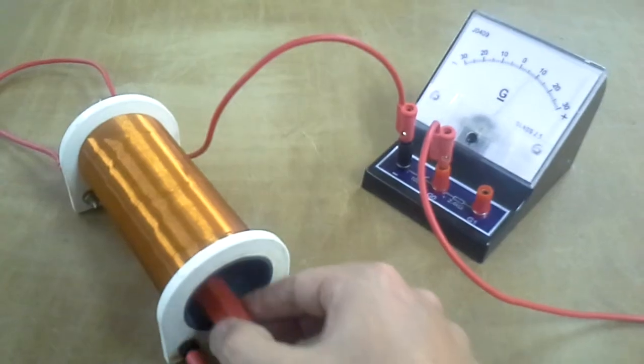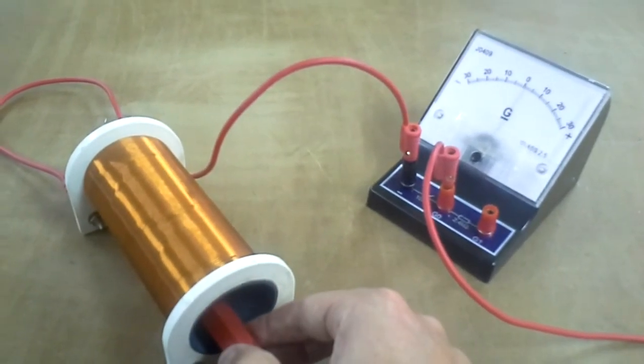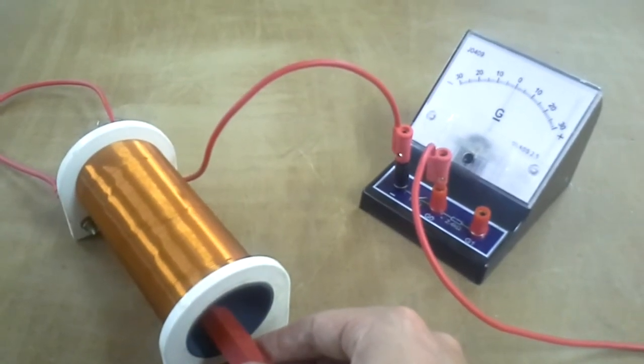If I move it forwards and backwards, you can see that I'm inducing a current inside the solenoid. When I move the bar magnet one way, the needle moves one way; when I move it the other way, the needle moves the other way.